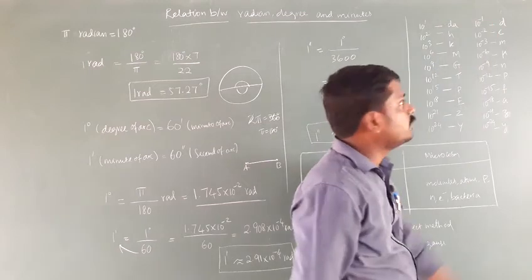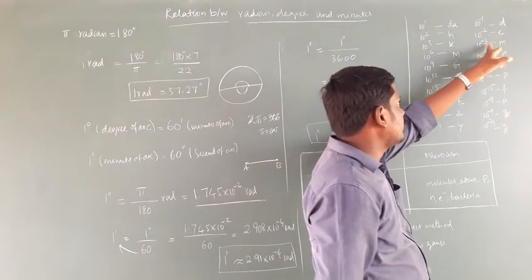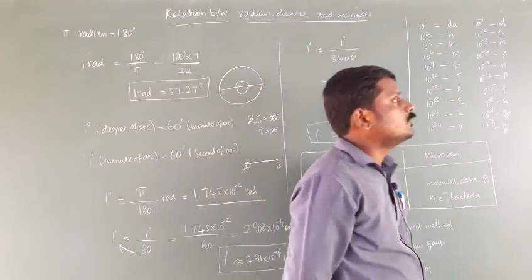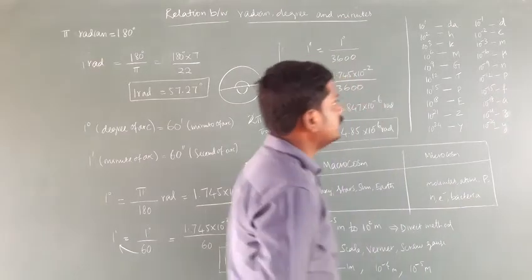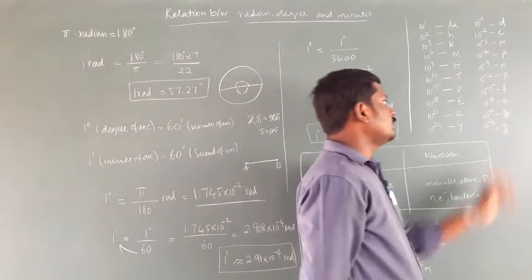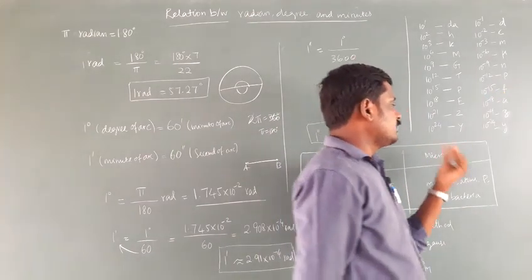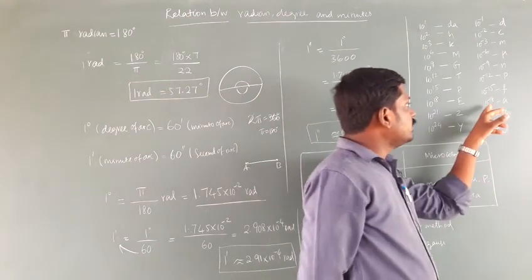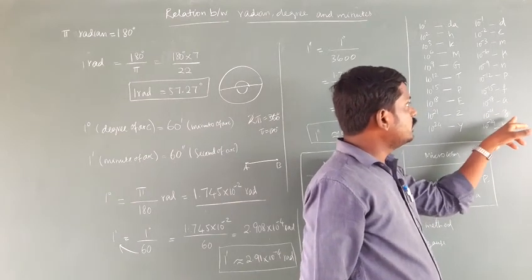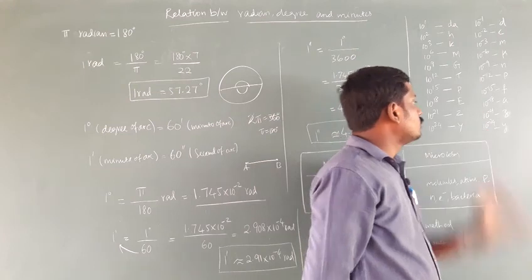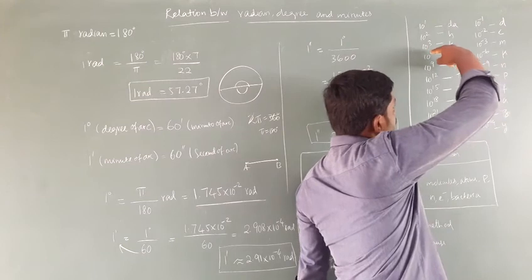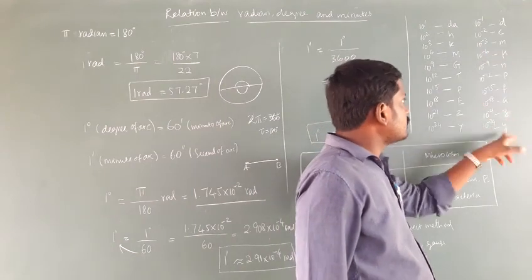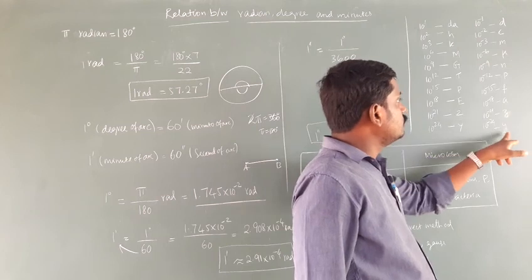For negative powers: 10⁻¹ is decimeter, 10⁻² is centimeter, 10⁻³ is millimeter. After that they jump in steps of 3: 10⁻⁶ is micro, 10⁻⁹ is nano, 10⁻¹² is pico, 10⁻¹⁵ is femto — which is the radius of the nucleus. 10⁻¹⁰ meter is the radius of an atom. Then 10⁻¹⁸ is atto, 10⁻²¹ is zepto, and 10⁻²⁴ is yocto. Small letters are used for prefixes from 10⁻⁶ and below.